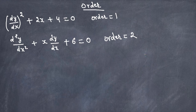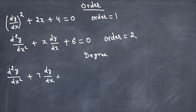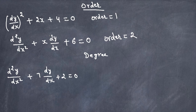Now let's move on to the degree of a differential equation. Consider: d²y/dx² plus 7·dy/dx plus 2 equals 0. The degree of a differential equation is the power of its highest derivative. In this equation, which is the highest derivative? This is a first derivative, this is also a first derivative, and this is a second derivative — so the second derivative is the highest.